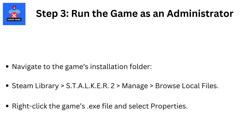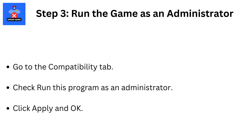Step 3: Run the game as an administrator. Navigate to the game's installation folder in your Steam Library, then find the STALKER 2 folder. Right-click the game's .exe file and select Properties. Go to the Compatibility tab and check 'Run this program as an administrator.' Click Apply and OK.